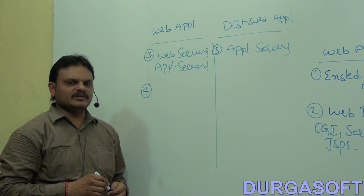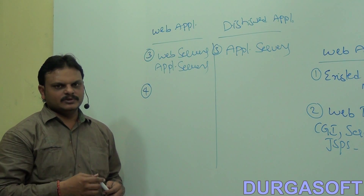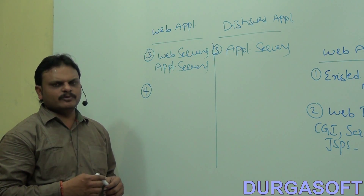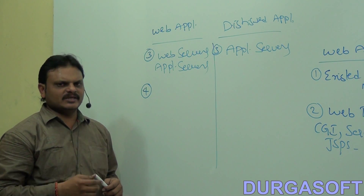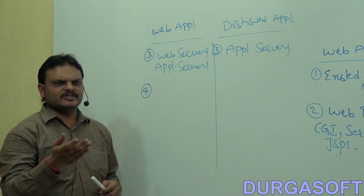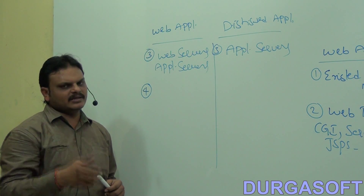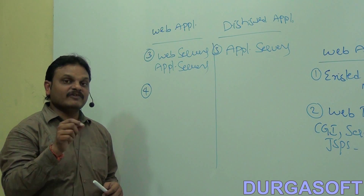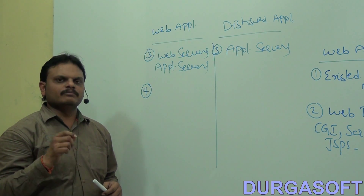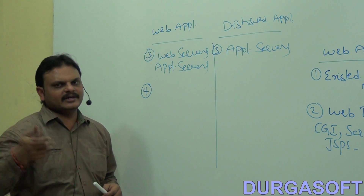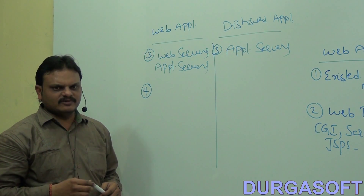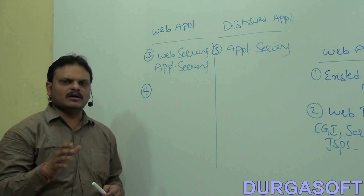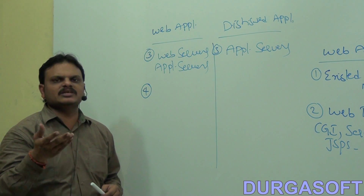Another difference: a web application is a collection of web components. Web components include Servlets, JSP, and CGI. These web components are executed by using only a web container.